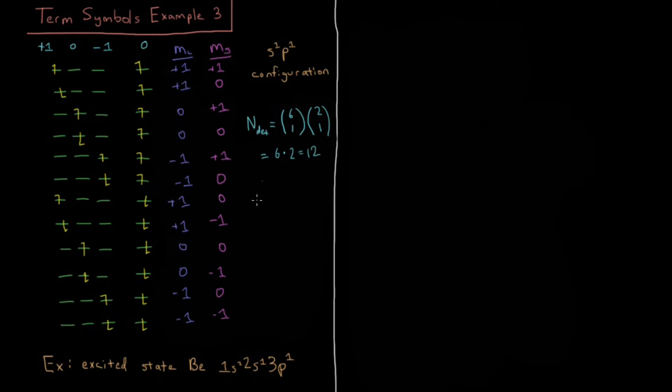So what is our maximum value of m sub s that we see? Max of m sub s is going to equal 1. That's the largest value for m sub s I see there. And our max for m sub l equals 1.